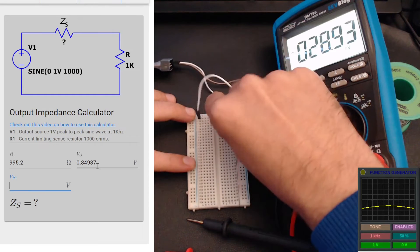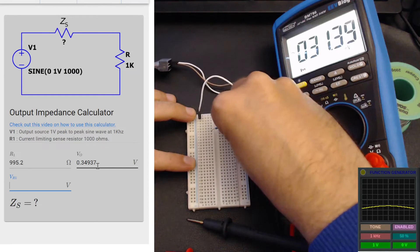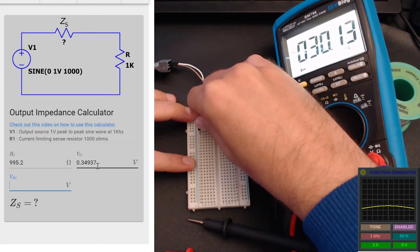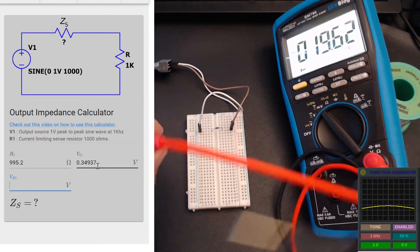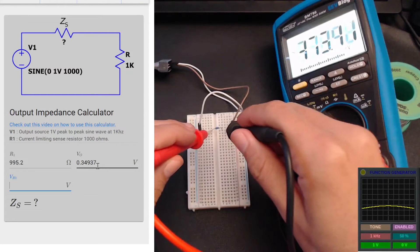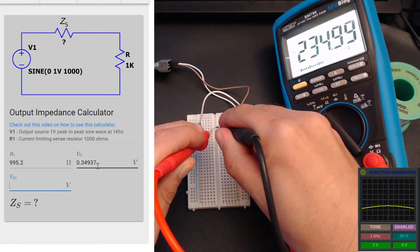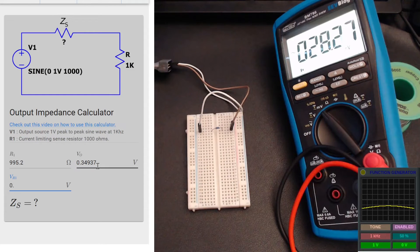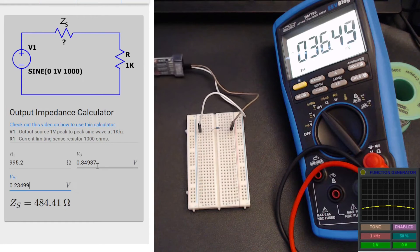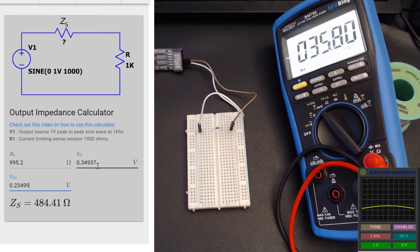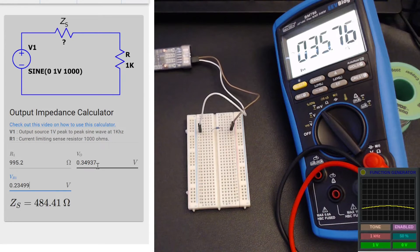Now I will connect our signal generator to our 1 kilohm resistor and it will act as a load. We want to get another measurement now across the resistor, which is 243.99 millivolts. And there we go, it's 484.41 ohms, which was very close to 460 ohms as calculated by our viewer in the previous video.